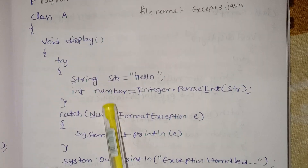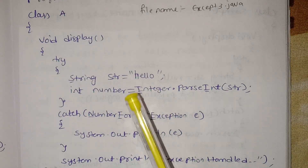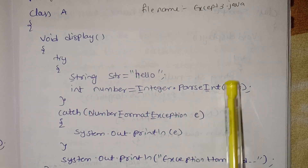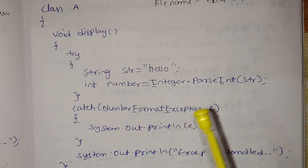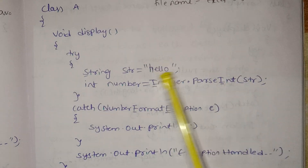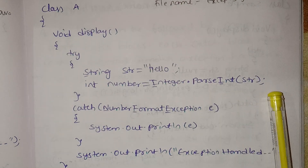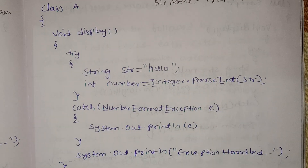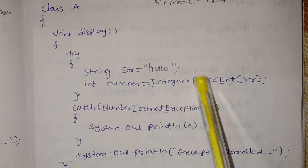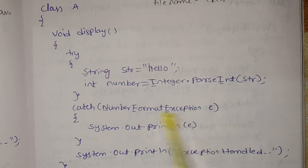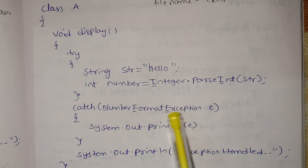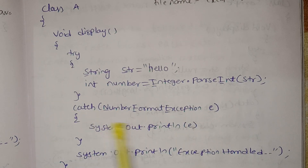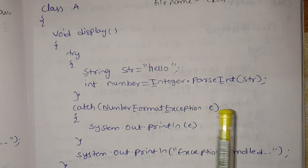We will create a heading and use integers in a block. We will expect this to be a try block, and we will also have a catch block. Here is the catch block, and we will use the NumberFormatException.